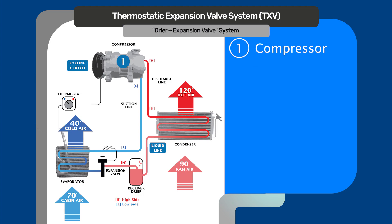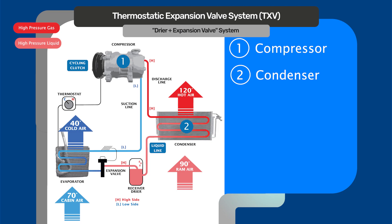Your refrigerant is going to leave your compressor and it goes through the discharge line through the condenser, where it's actually going to release heat into the air to lower the pressure down. When the refrigerant leaves the condenser, it goes through the liquid line into the dryer. The dryer has a desiccant in it to take any moisture out of the system, and it also has filtering properties to capture any particles that may be in the refrigerant.